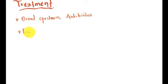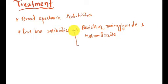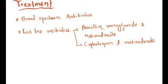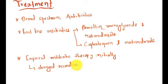Talking about broad spectrum antibiotics, the first line is penicillin with aminoglycoside and metronidazole, or cephalosporin and metronidazole. Empirical antibiotic therapy is used initially but later changed according to the results of culture and sensitivity.